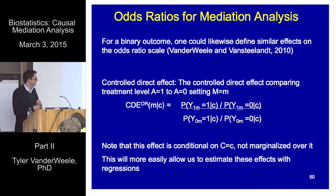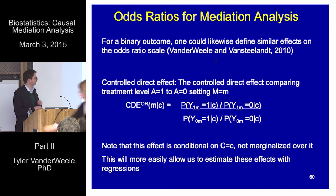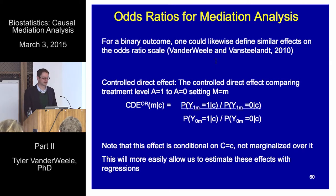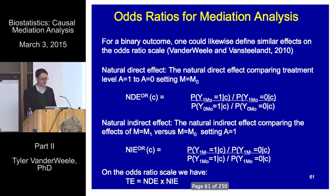Rather than looking at the difference between those two counterfactual outcomes, we consider the odds of the outcome if we fix the exposure to 1 and the mediator to m, versus the odds of the outcome if we fix the exposure to 0 and the mediator to m. So we can define the controlled direct effect on an odds ratio scale the same way — same contrast of two counterfactuals, but now on an odds ratio scale.